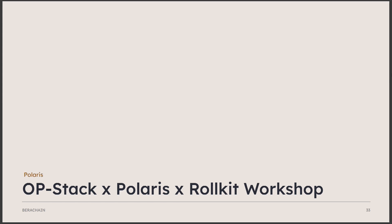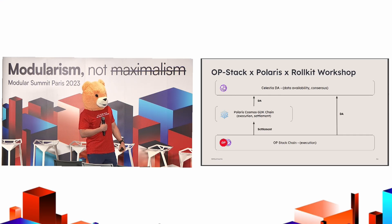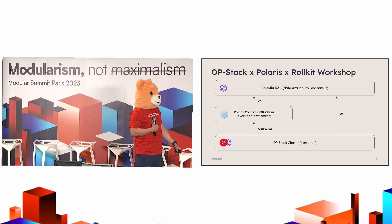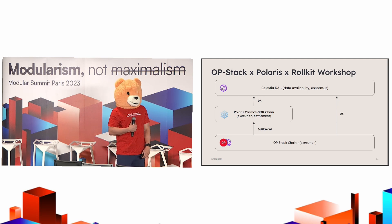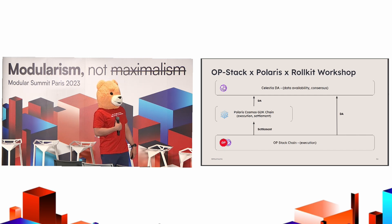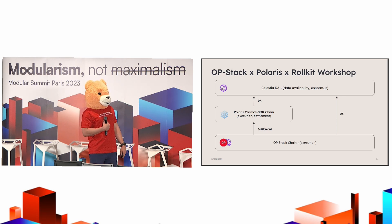Earlier today I did a workshop with Diego and Josh from Celestia, basically showcasing the modularity of Polaris and how true the EVM equivalence really is. We had the Celestia DA DevNet running for data availability and consensus, a Polaris SDK chain integrated with RollKit rolling up to the DA, and then — to really show off EVM compatibility — we deployed an OP stack chain utilizing that Polaris chain for its settlement. This truly shows we have an EVM-equivalent chain not only from an execution perspective but RPCs and everything all the way down, as OP stack deployment is notoriously finicky and is a great test of where we are.